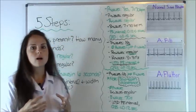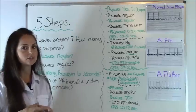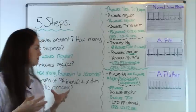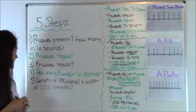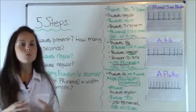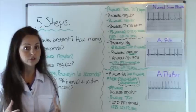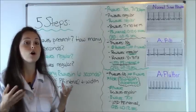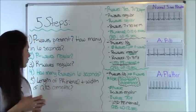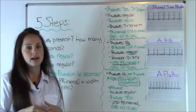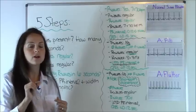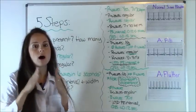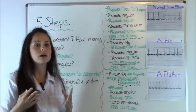Step four, how many R waves are in six seconds? You're going to do this the same way that you calculated your P waves. And number five, if you do have P waves, what is the length of your PR interval? This is very important whenever you are looking for a heart block. And also the width of your QRS complex — you count the little squares in between the spike to see how wide or narrow it is.